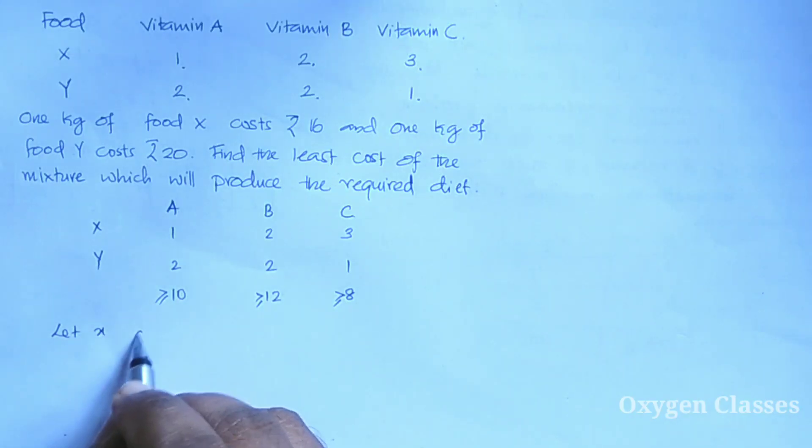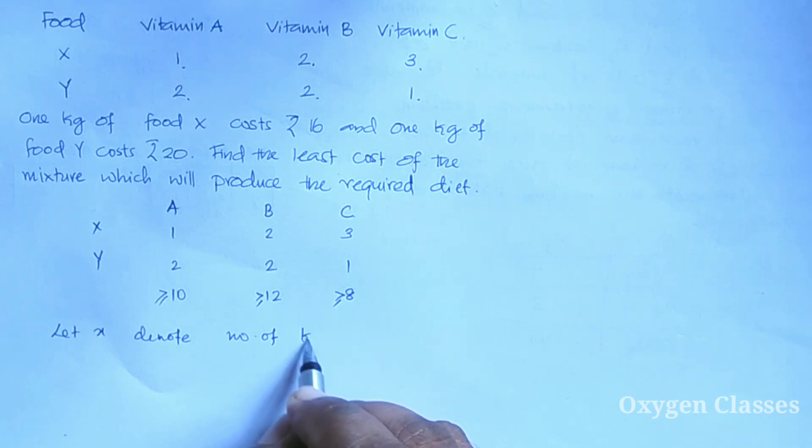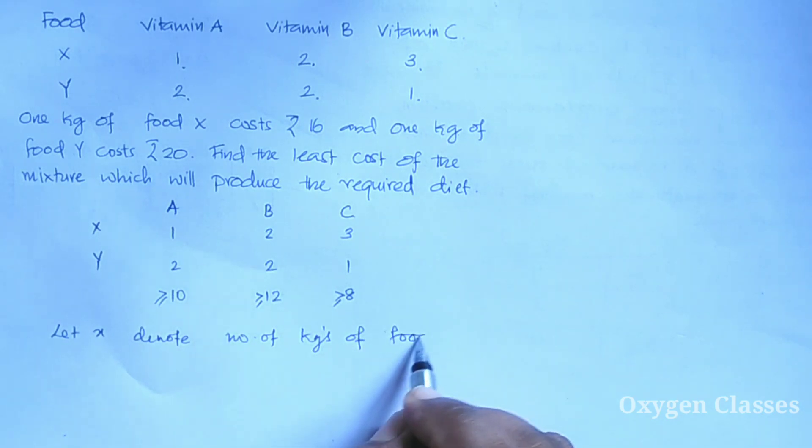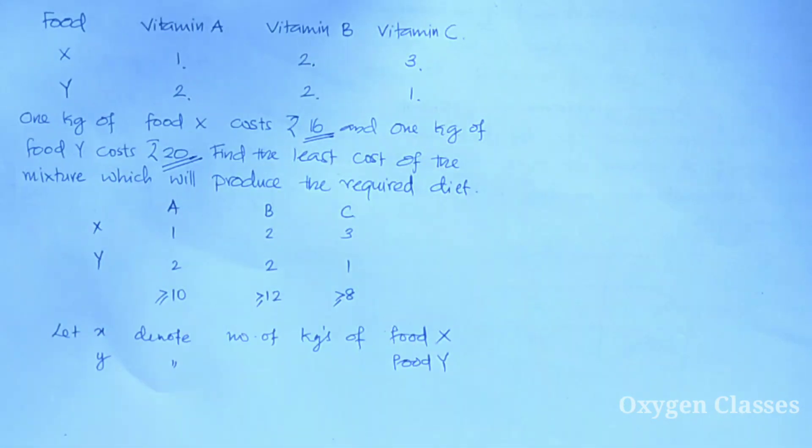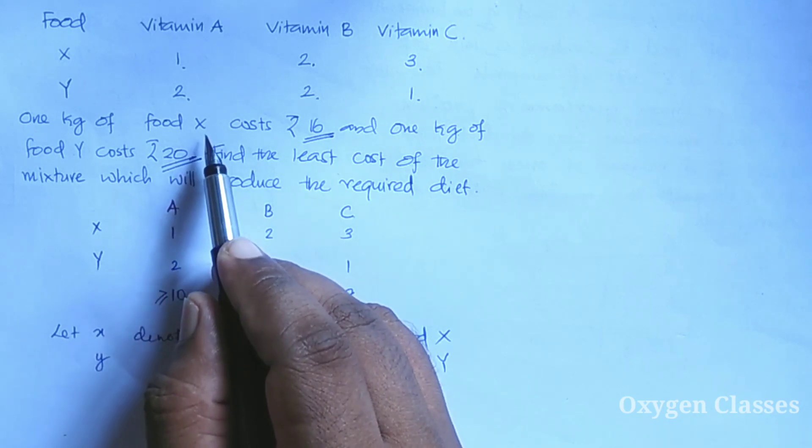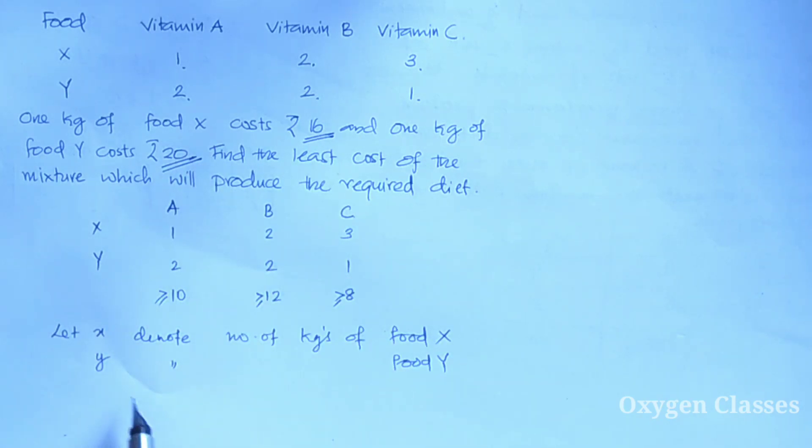Let X denote the number of kilograms of food X and Y denote the number of kilograms of food Y. The cost price of food X is 16 for 1 kilogram and price for 1 kilogram of Y is 20 rupees.